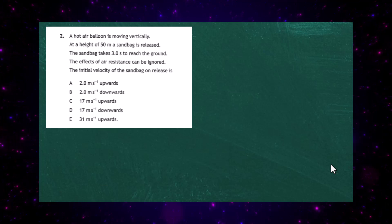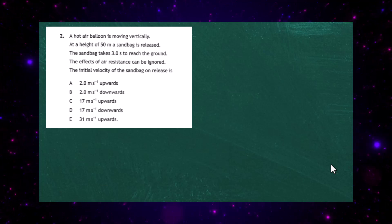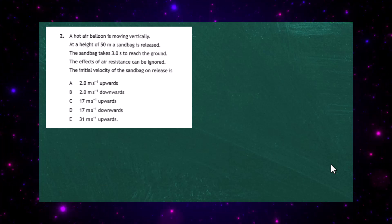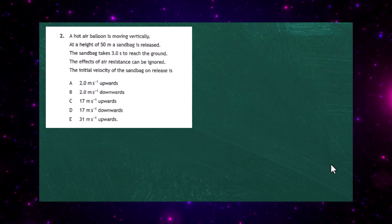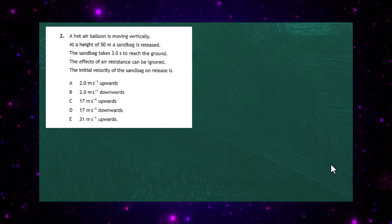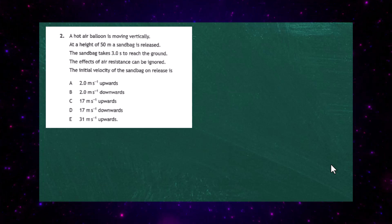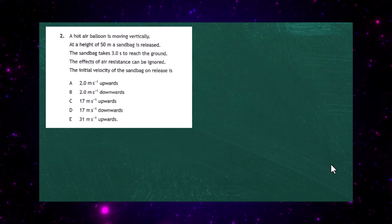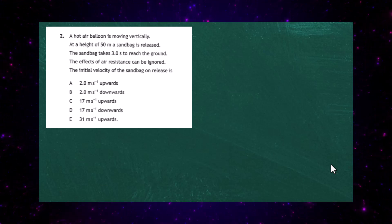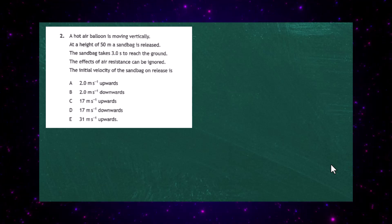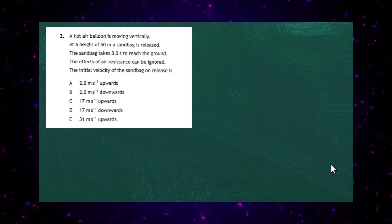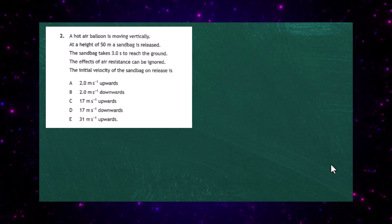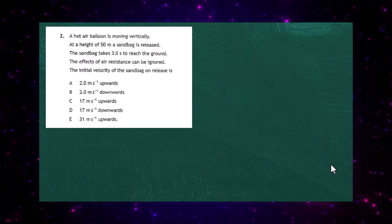Question 2 from the 2023 Higher Physics examination paper 1 from the SQA. A hot air balloon is moving vertically, and at a height of 50 meters a sandbag is released. The sandbag takes three seconds to reach the ground, and the effects of air resistance can be ignored. The initial velocity of the sandbag on release is given, and you get five responses.